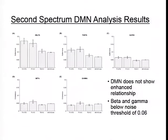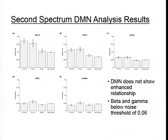These plots show results from our default mode network analysis in the second spectrum. The default mode network doesn't show any enhanced relationship. In all frequency bands there was no significant difference between T1–T2 and T1–C. In the beta and gamma bands — two of the bands included in previous studies — the coherence estimates we found on average were not above our noise threshold of 0.06, so there were no values we could consider significantly non-zero.